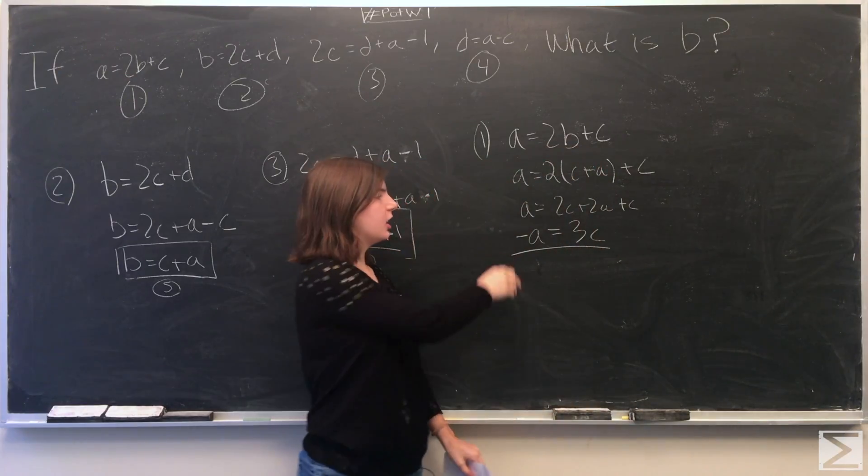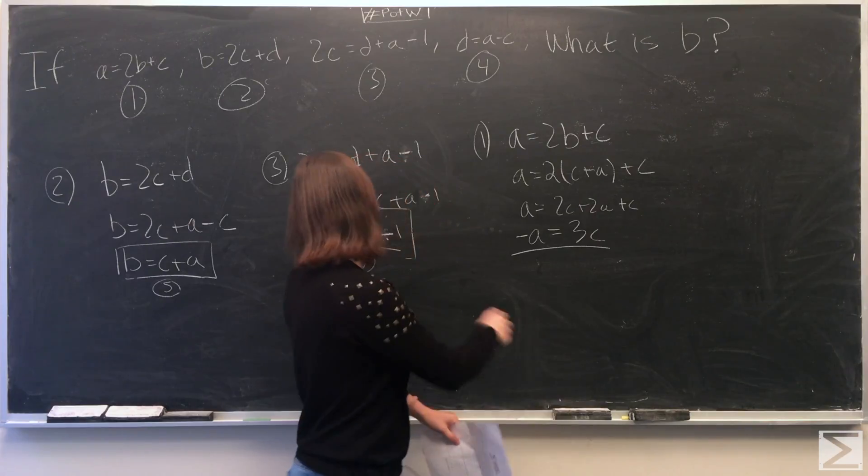We get negative a equals 3c, which would be equation 7.